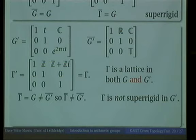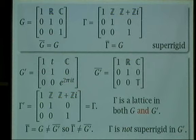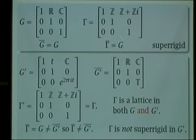Gamma thinks G is the universe — Gamma does not know anything about G'. What we did was take this group G that Gamma was happy in, and then without telling Gamma, we changed the group by adding rotations to the universe. Gamma has no way of knowing that there are rotations down here. So if you have a homomorphism defined on Gamma, it has no idea that when it extends, it's supposed to take care of these rotations. It has no hope of being superrigid.